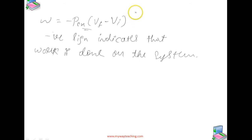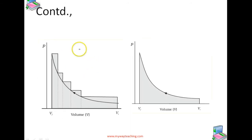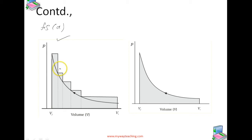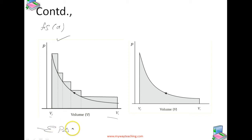If the pressure is not constant at every stage of compression but changes in a number of finite steps, the work done on the gas will be summarized over all the steps, as shown in Figure A. This is a PV plot when pressure is not constant and changes in finite steps during compression from initial volume V_i to final volume V_F. Work done on the gas is represented by the shaded area, and can be summarized as −Σ P ΔV over all steps.